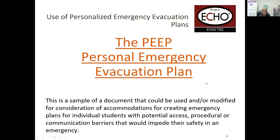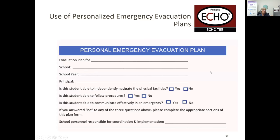Moving to the next screen: it's the Personal Emergency Evacuation Plan. The question people had was about who needs a plan. If you look at those first questions after the student demographics: Is this student able to navigate the facilities? Can they follow procedures? Are they able to communicate effectively? If you say no to any of those, you can stop right there — this student needs a plan.